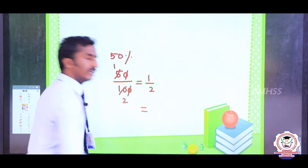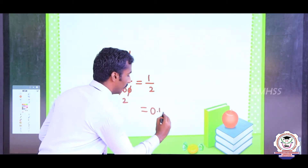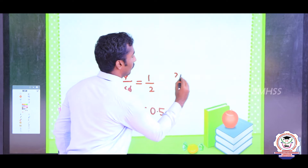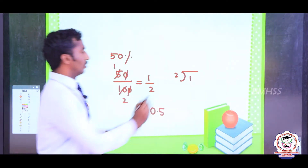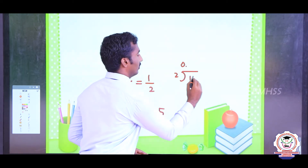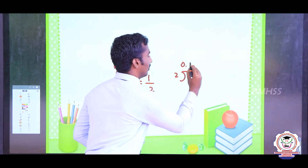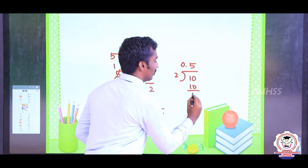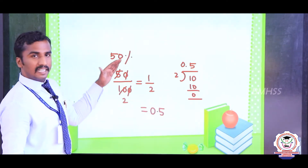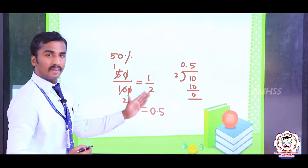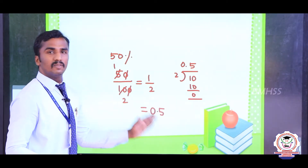1 by 2, dividing, we get 0.5. Since 1 is not divisible by 2, we put 0.0 and then 10 divided by 2 gives 5, so we get 0.5. So: percentage converting into fraction, fraction converting into decimal value.